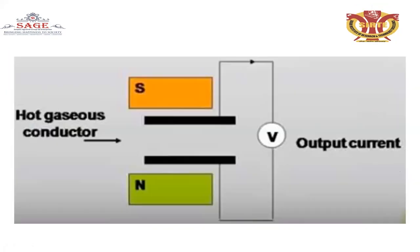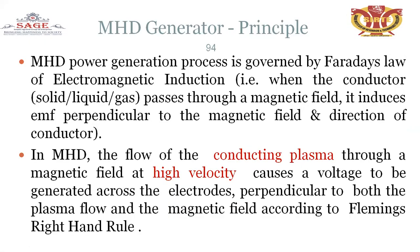Hot gases act as the conductor and produce output current. The north and south poles are shown, and two dissimilar materials are connected with the north and south pole directions. The output current is generated from this arrangement. The hot gases maintain the generator principle, governed by Faraday's law of electromagnetic induction.